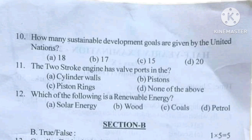Question number 11: the two-stroke engine has ports in the cylinder — valves, pistons, piston rings, or none of the above?